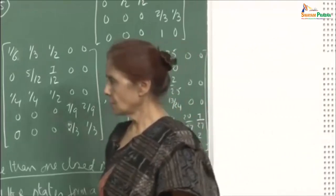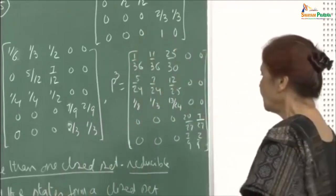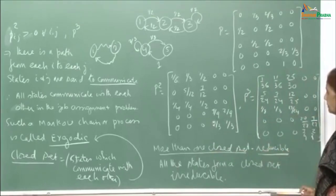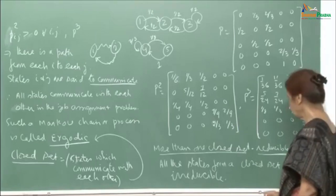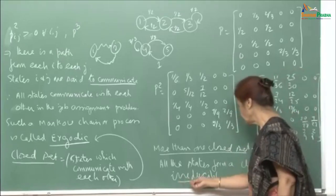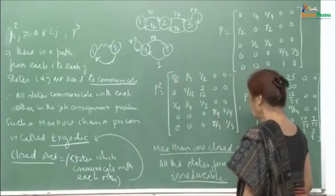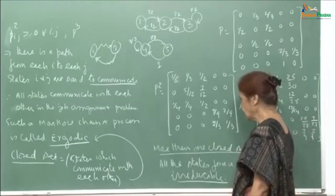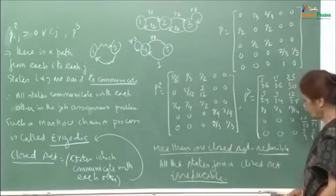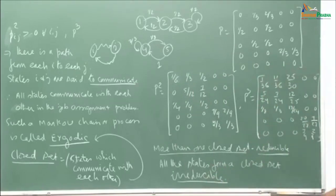If there is more than one closed set, we call such a chain reducible. If all states form one single closed set, then it is irreducible. What we have been discussing so far has been irreducible chains, and irreducible means all states communicate with each other, making it ergodic. But even this classification is not enough — we need to go further.